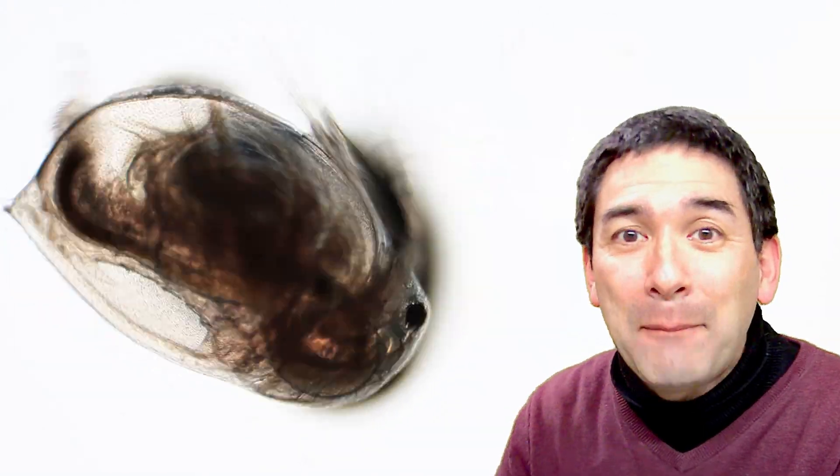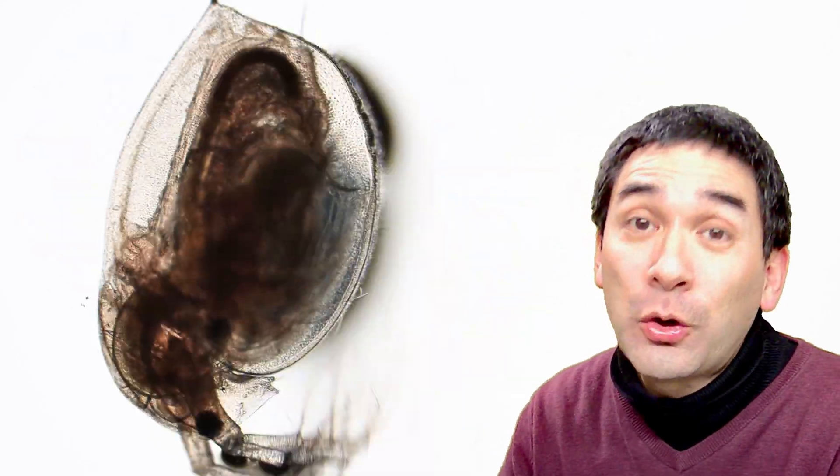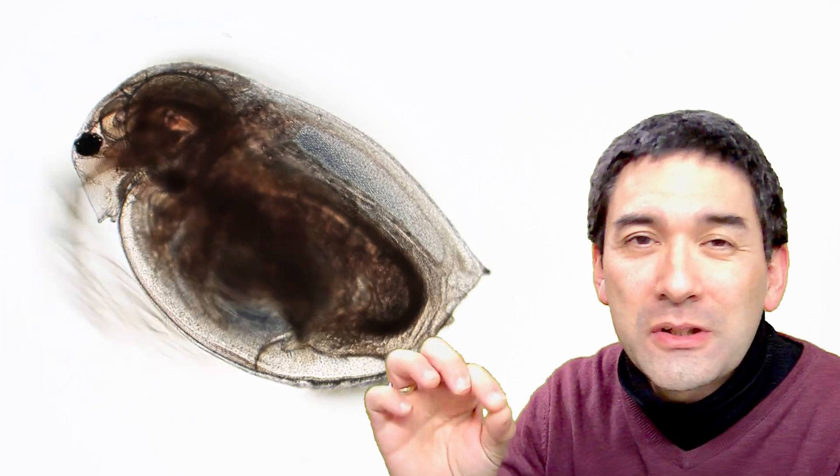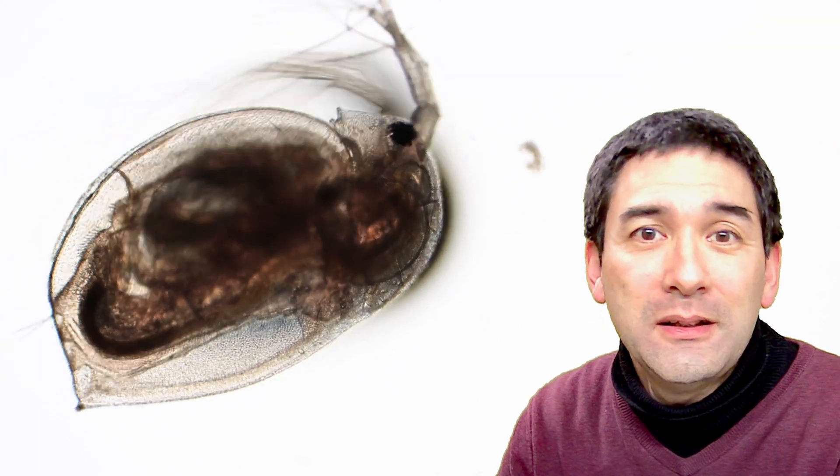Okay, the water flea is happily moving around, and they're called water fleas because of their fast rapid movement - it looks almost like they're jumping like fleas through the water. Okay, well let's start the experiment right now.